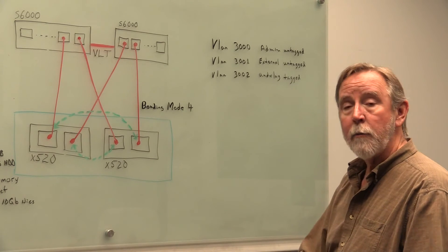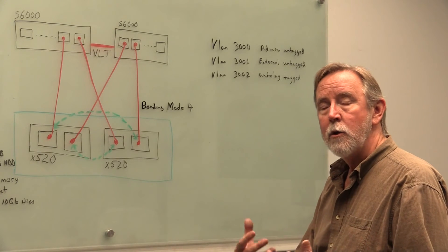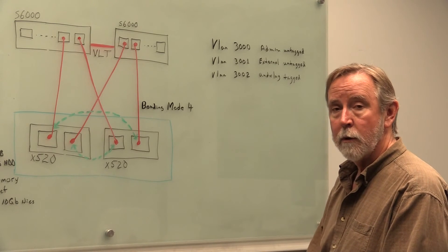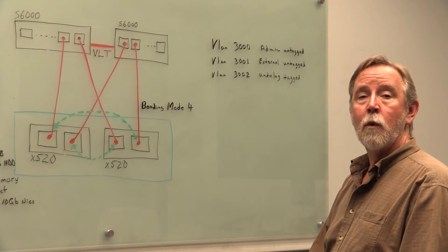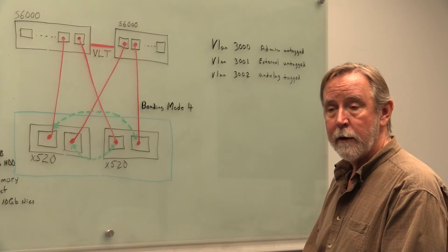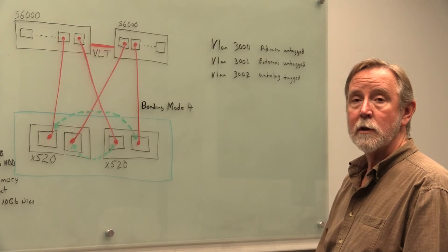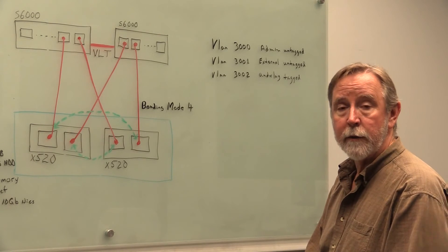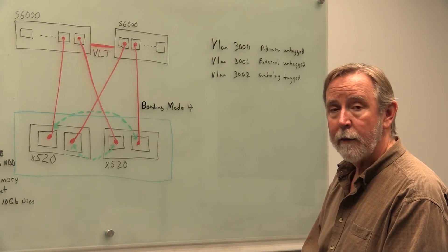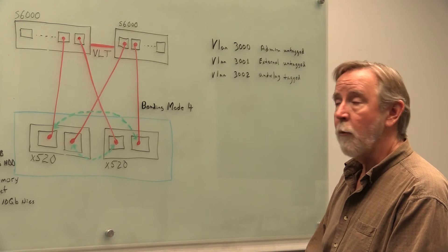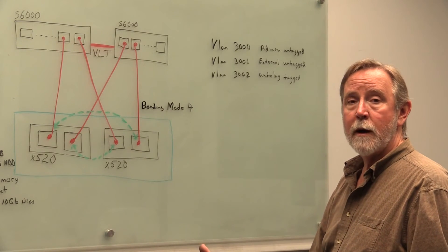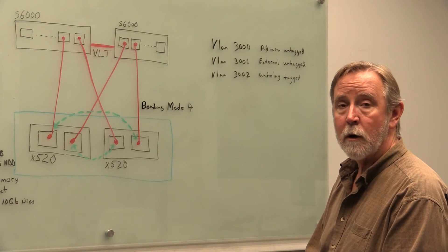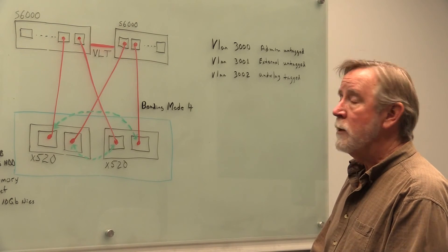So once that completes, then the next thing is, in the process of installing the head node, you enter some configuration parameters, and some of the information you'll enter would be information that's needed for the compute node installs next. The compute node install, once you get through with the head node, is just dead simple. Again, it's all scripted, but you already entered a lot of the information during the process. So it takes just a very short time, maybe half an hour to an hour, to actually get the compute node installed and configured.